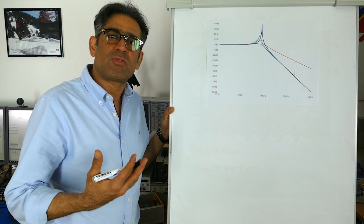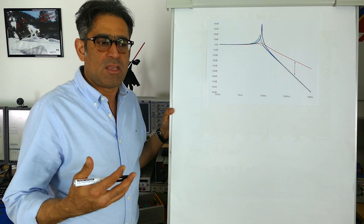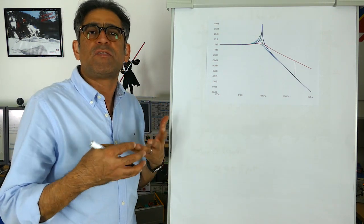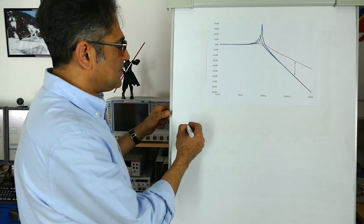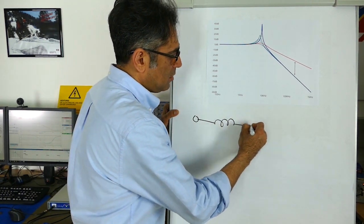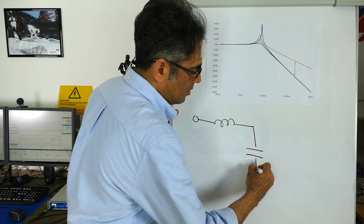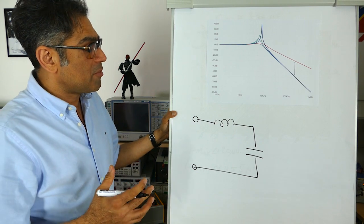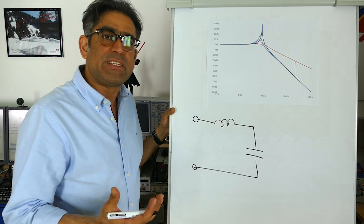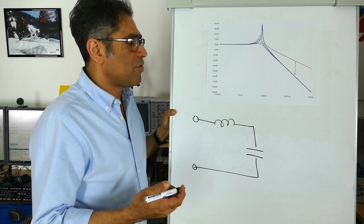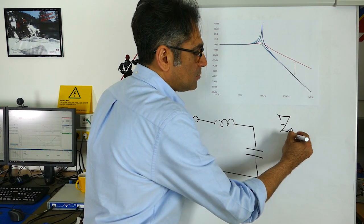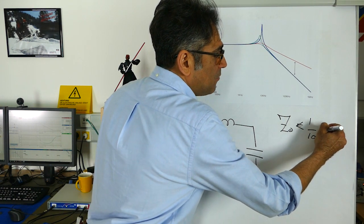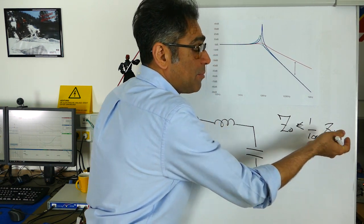So in one of our previous videos we designed a differential mode filter. In that video we calculated a value of C and a value of L. If you also remember we talked about Middlebrook stability criteria and we know that the Z out of the filter has to be smaller than one tenth of Z in of the power supply.